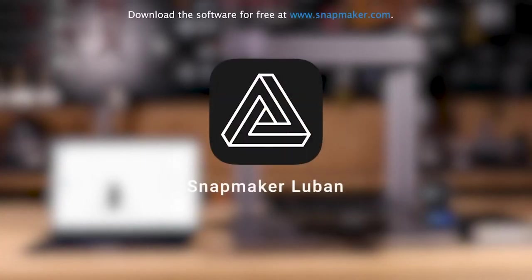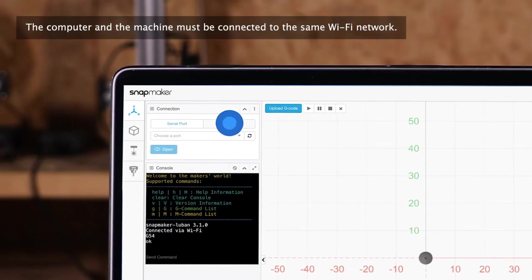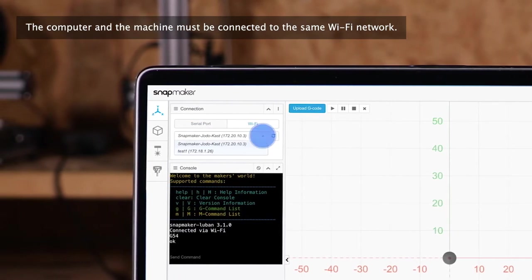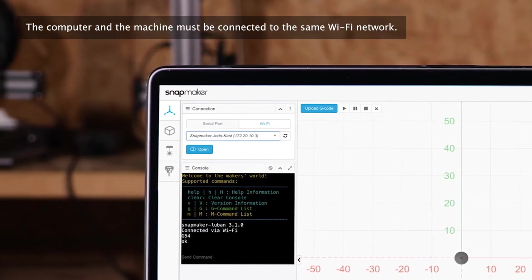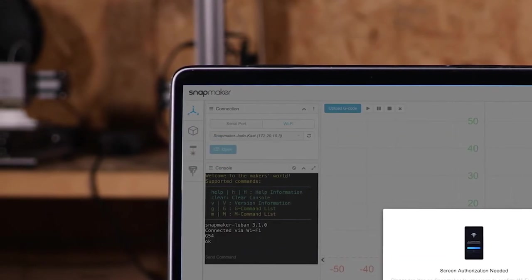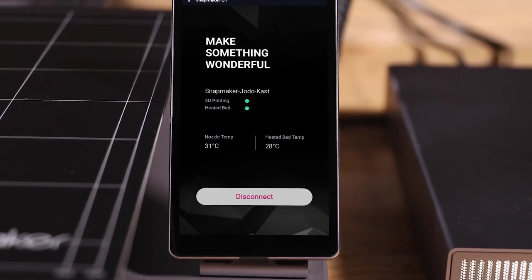Next, start the Snapmaker Luban software on your computer. Click the Wi-Fi button at the connection area. Refresh the list and select your machine. Send a connection request to your machine. Then tap Yes on the touch screen to complete the connection.